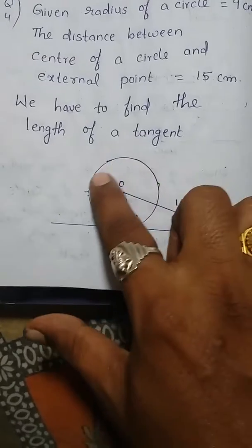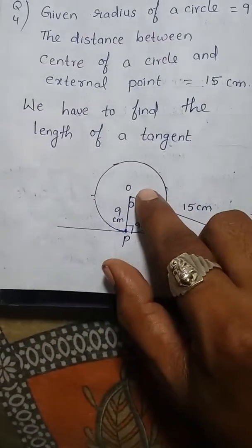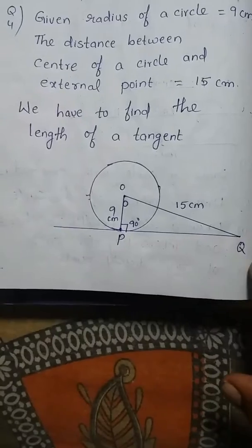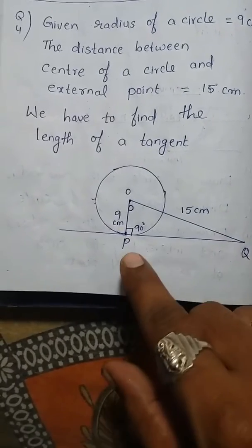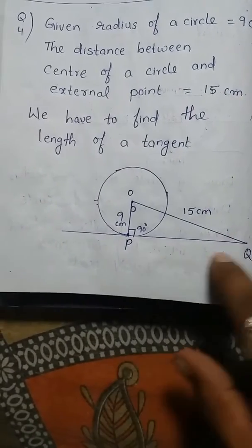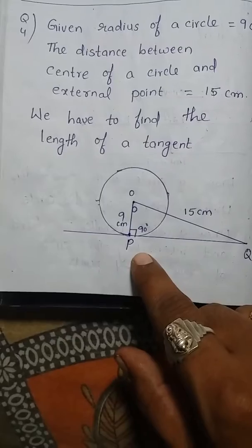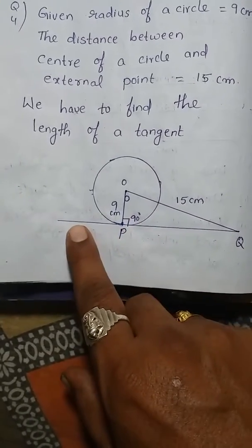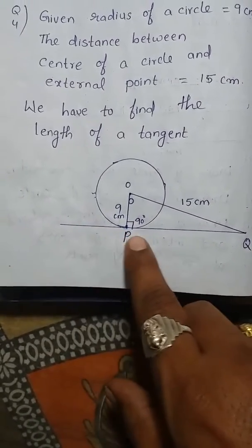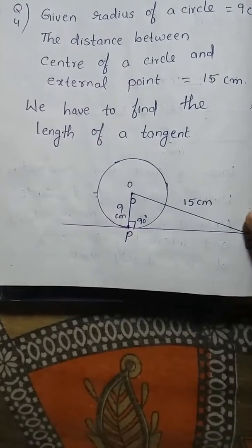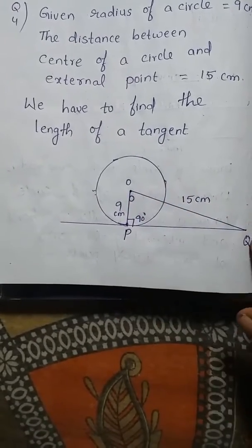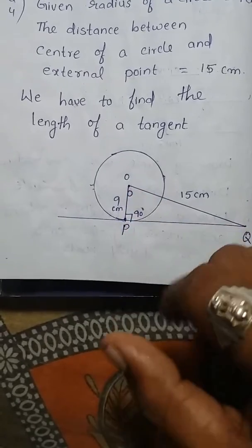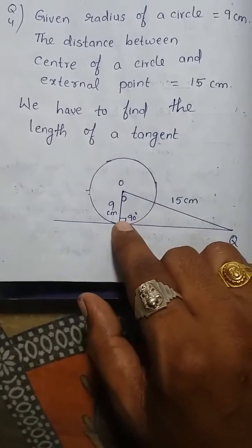Here is a diagram for that given information. This is a circle, O is the center, and Q is the external point. PQ is a tangent where P is the point of contact, so we have to find the length of PQ. OQ is 15 centimeters and the radius OP is 9 centimeters.